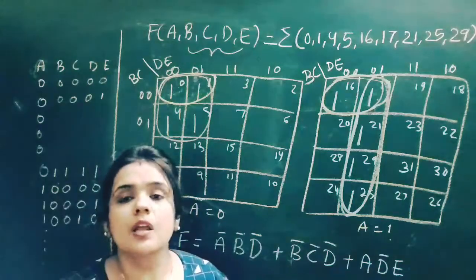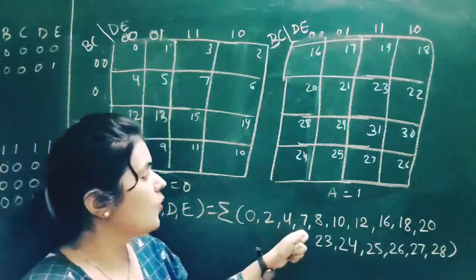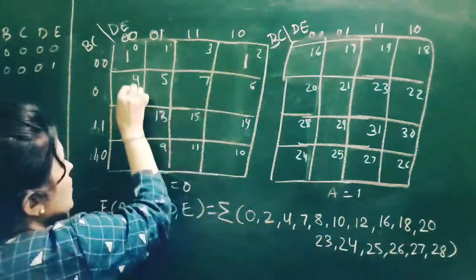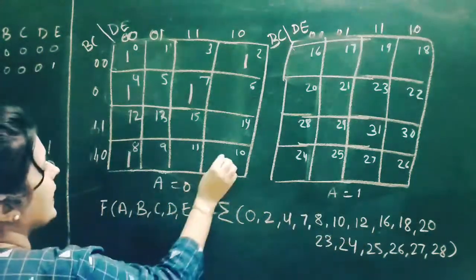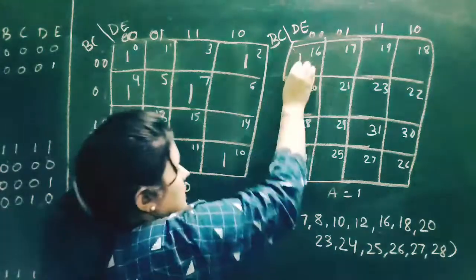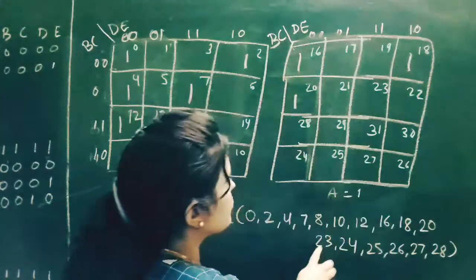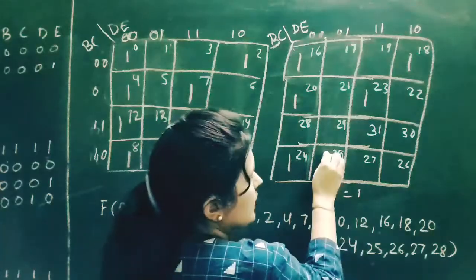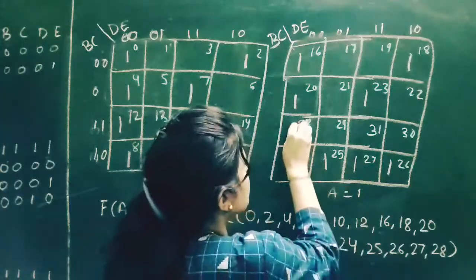Now we solve another example. The second question has minterms: 0, 2, 4, 7, 8, 10, 12, 16, 18, 20, 23, 24, 25, 26, 27, 28. We fill in 1s at each of these positions across the two K-maps.